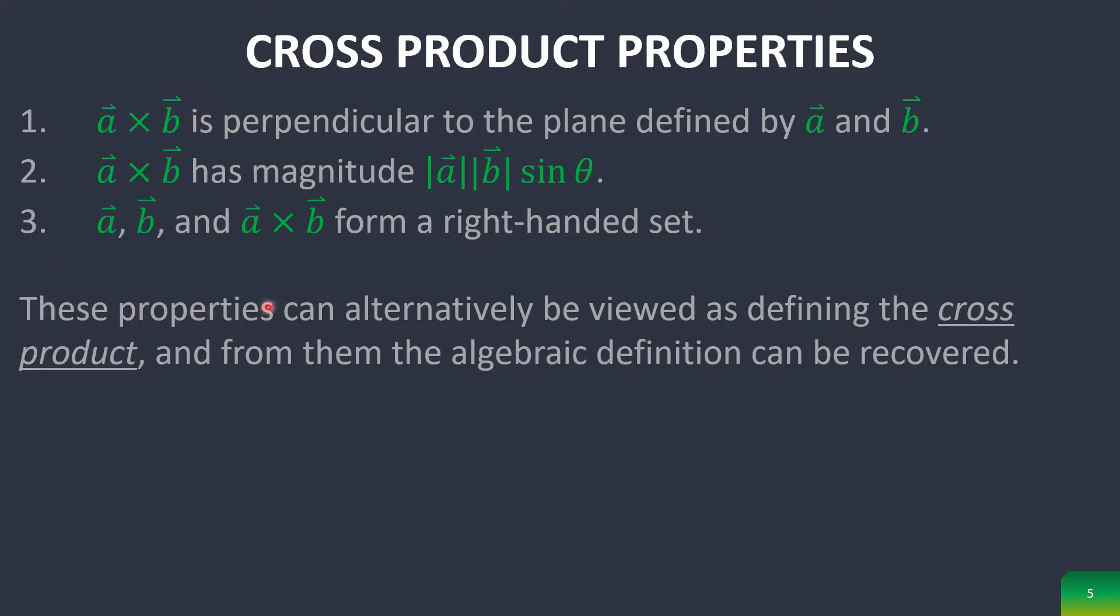These are the basic properties of the cross product. A vector cross B vector is perpendicular to the plane defined by A and B. So basically, if you have a plane right here that's defined by A vector, B vector, then you're going to have that the new cross product is going to be coming perpendicular out of this.